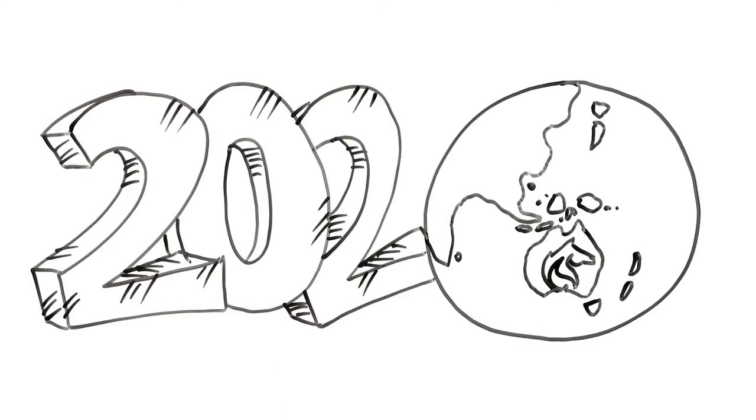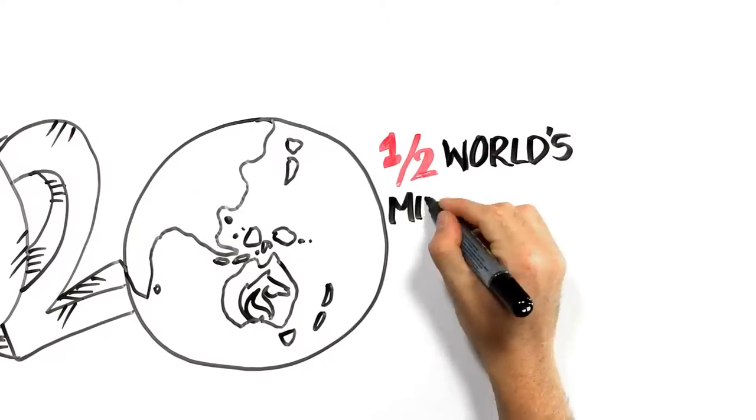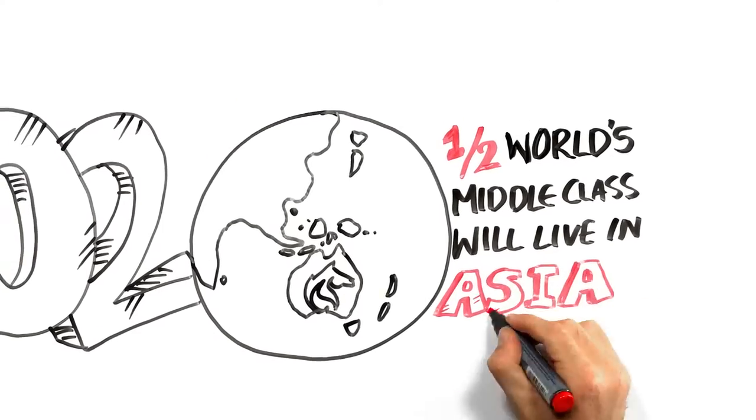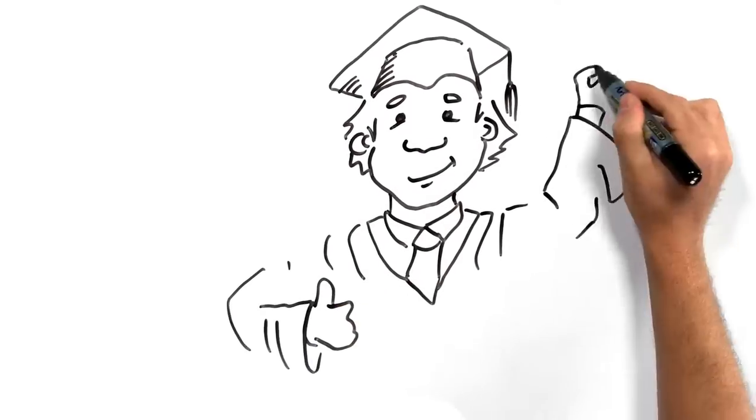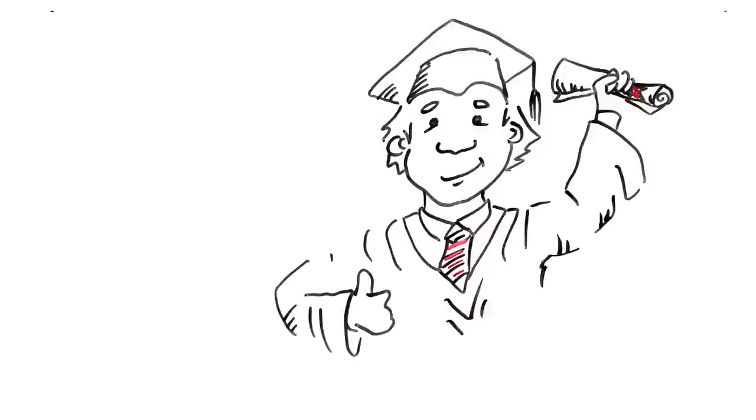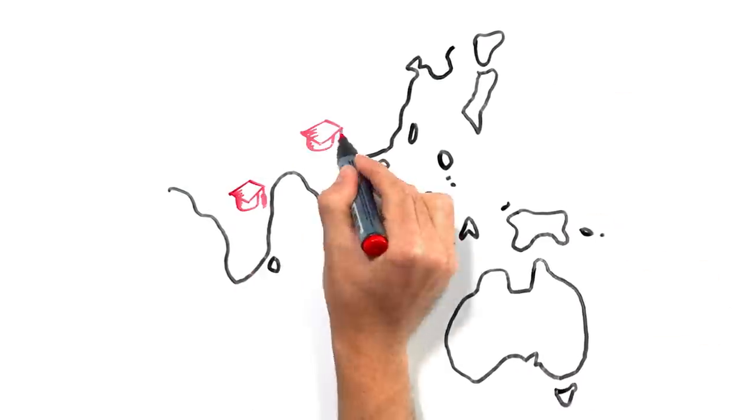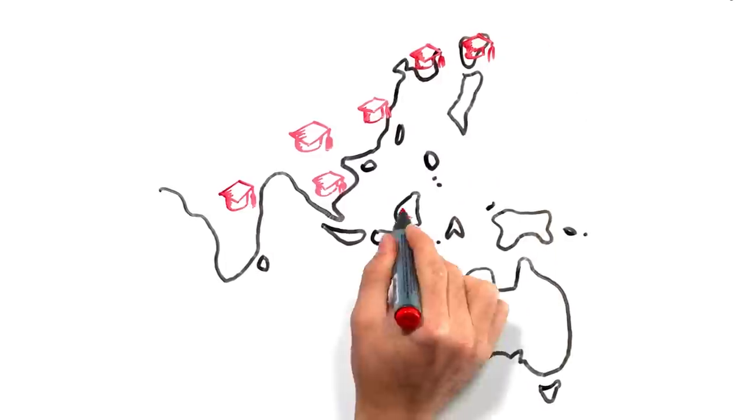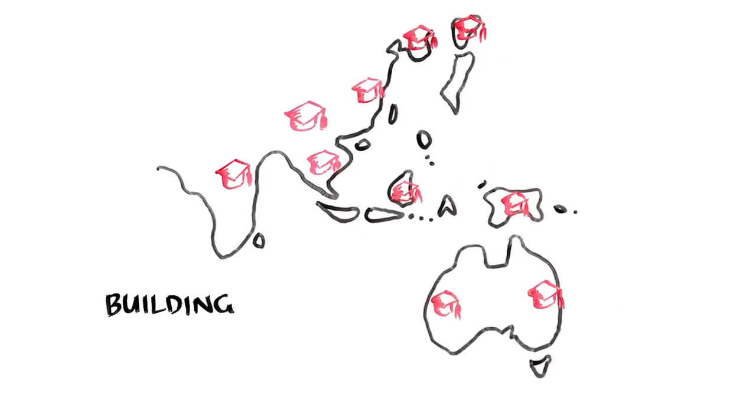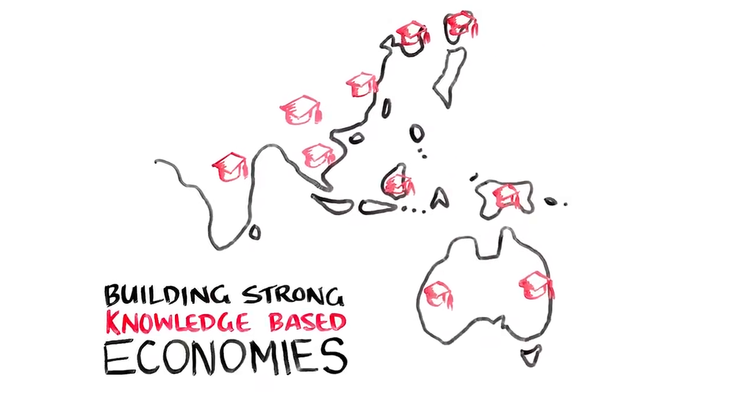By 2020, it is estimated that more than half of the world's middle class will live in Asia, and this will create demand for great university education. Across that same period, countries in Asia will establish many more great universities as governments increasingly invest in building strong knowledge-based economies.